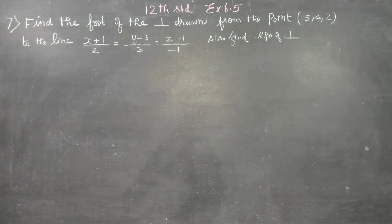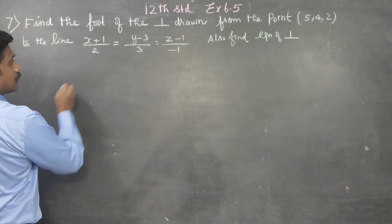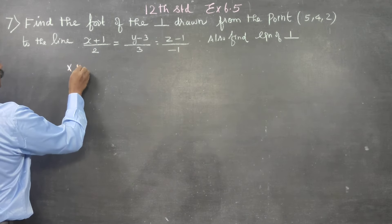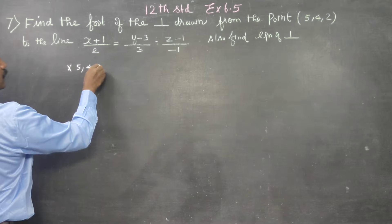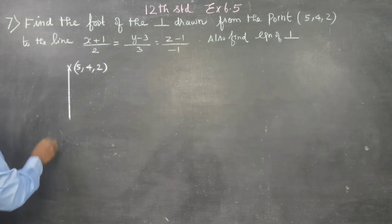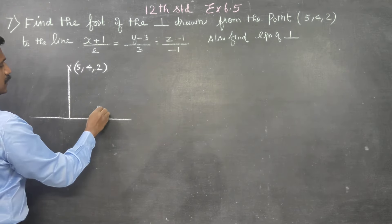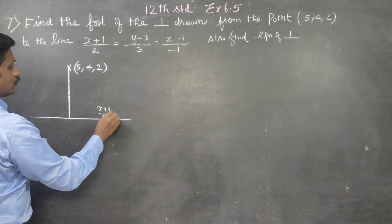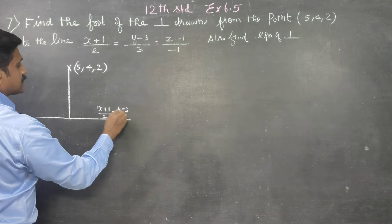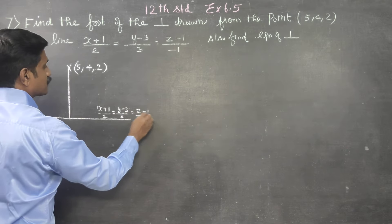Dear 12th standard students, in exercise number 6.5, question 7, find the foot of the perpendicular drawn from the point (5, 4, 2) to the line (x+1)/2 = (y-3)/3 = (z-1)/(-1).